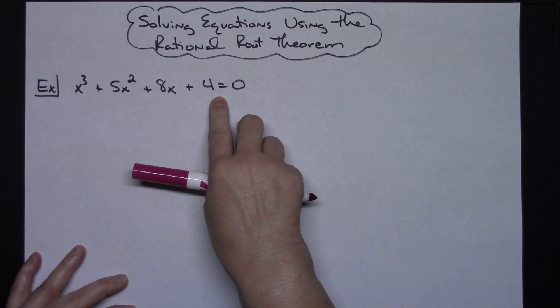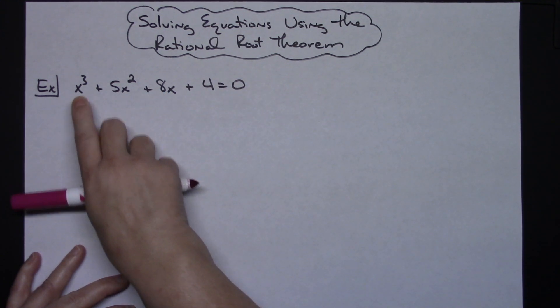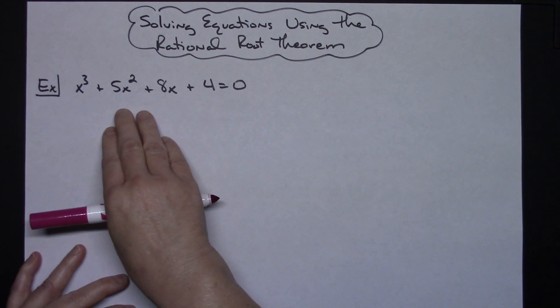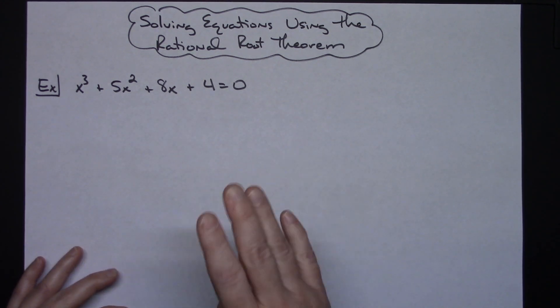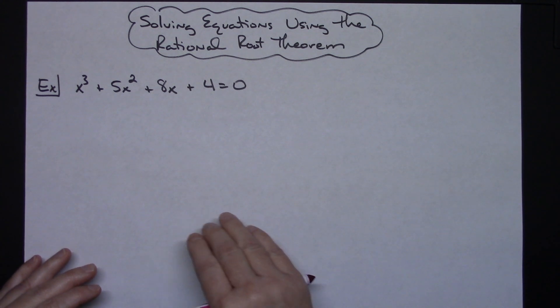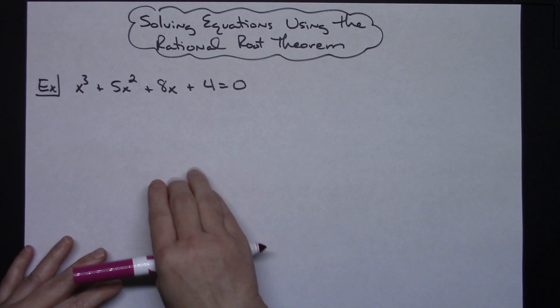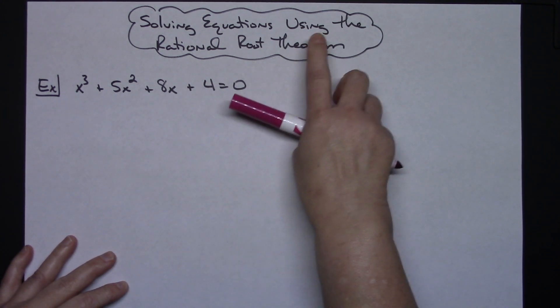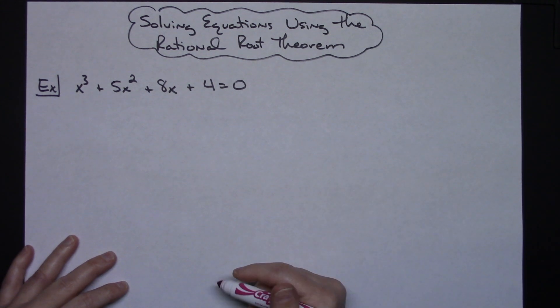I would obviously try factor by grouping first in order to use that zero product property to see if it wouldn't work out nicely. If that doesn't work then you've got to try something else and the rational root theorem is the place you want to go with that.